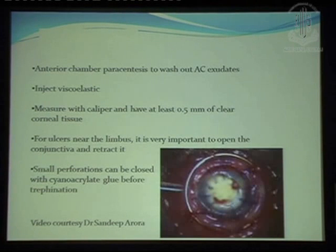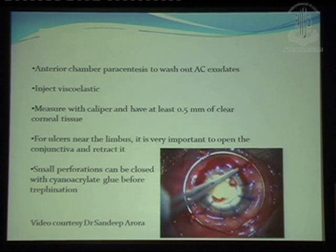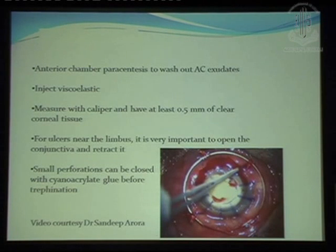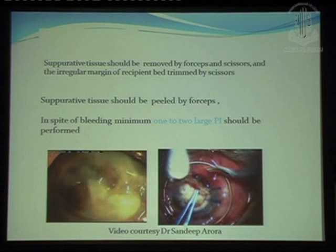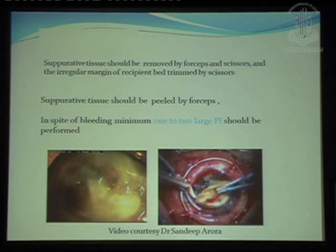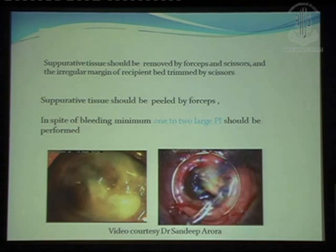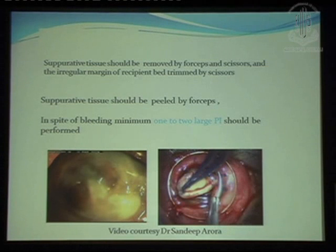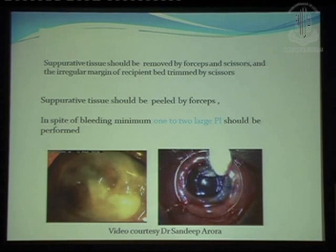First, I compulsorily put a Flieringa ring, then make an anterior chamber paracentesis and wash off all the exudates, inject viscoelastic, and form the AC properly. Then after proper measurements, I do the trephination. You have to make sure the whole large ulcer is covered — if it is close to the limbus, you might also have to do a conjunctival peritomy, because otherwise the sutures would go into the conjunctiva. If there is a small perforation, you can seal it off with cyanoacrylate glue so that trephination becomes much easier. After trephination, you cut the globe like a normal PK — you need good corneal scissors, right and left or universal — and try to make sure all the infected area is excised, leaving nothing behind for the microbes. The anterior chamber needs to be cleaned properly: all the hypopion, exudates, and fibrin — do a good cleaning.